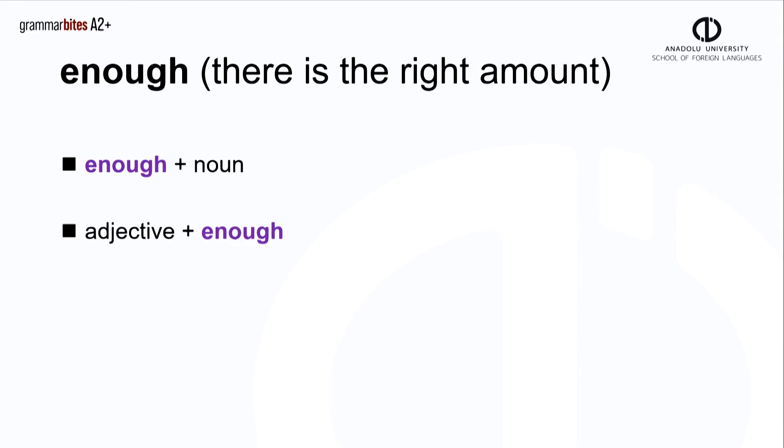We use enough when we have the right amount of something and we can use it in different ways. We can use enough, then a noun. Or we can use an adjective, followed by enough. Let's look at some examples.